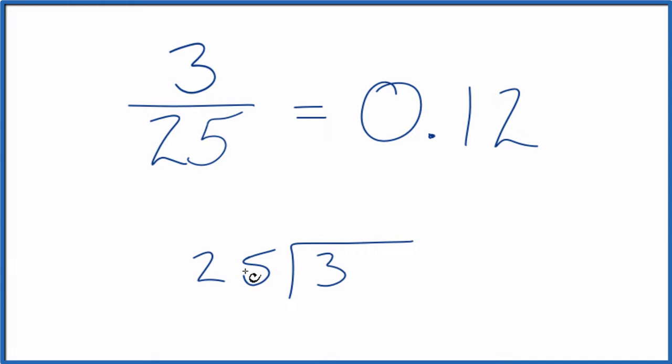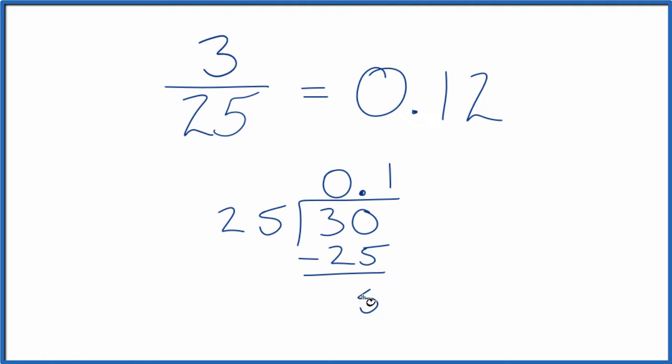So 3 divided by 25, and we do that longhand. 25 doesn't go into 3. Let's make it 30, put a 0 with a point up here, and now 1 times 25 gives us 25. We subtract, we have 5.